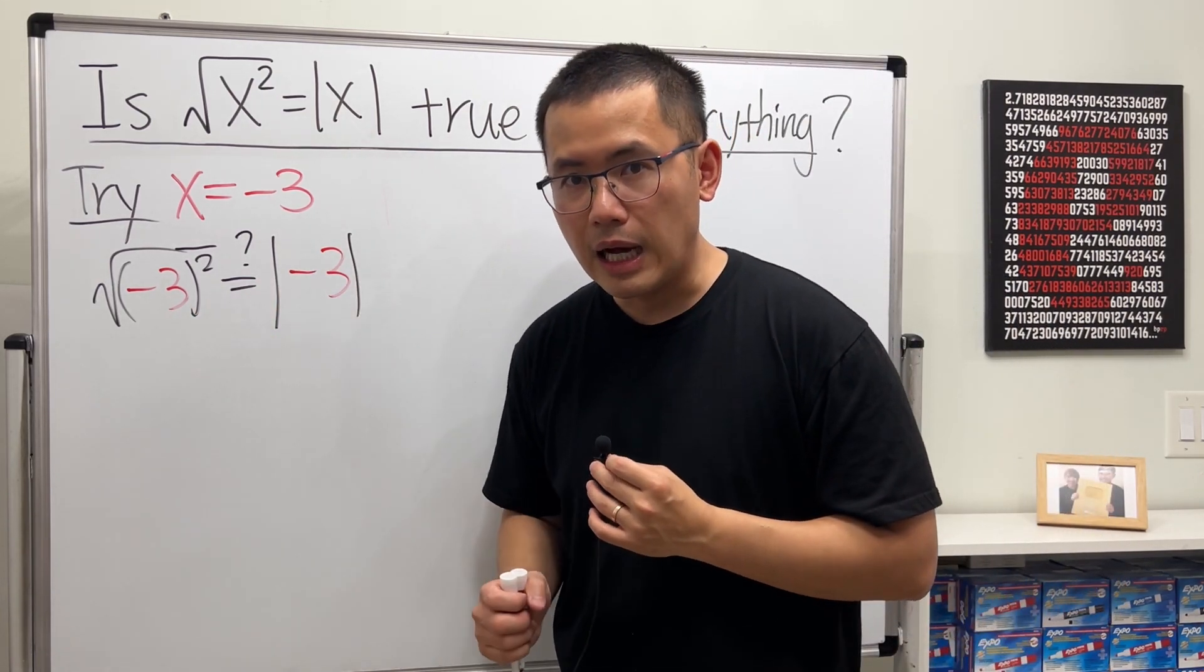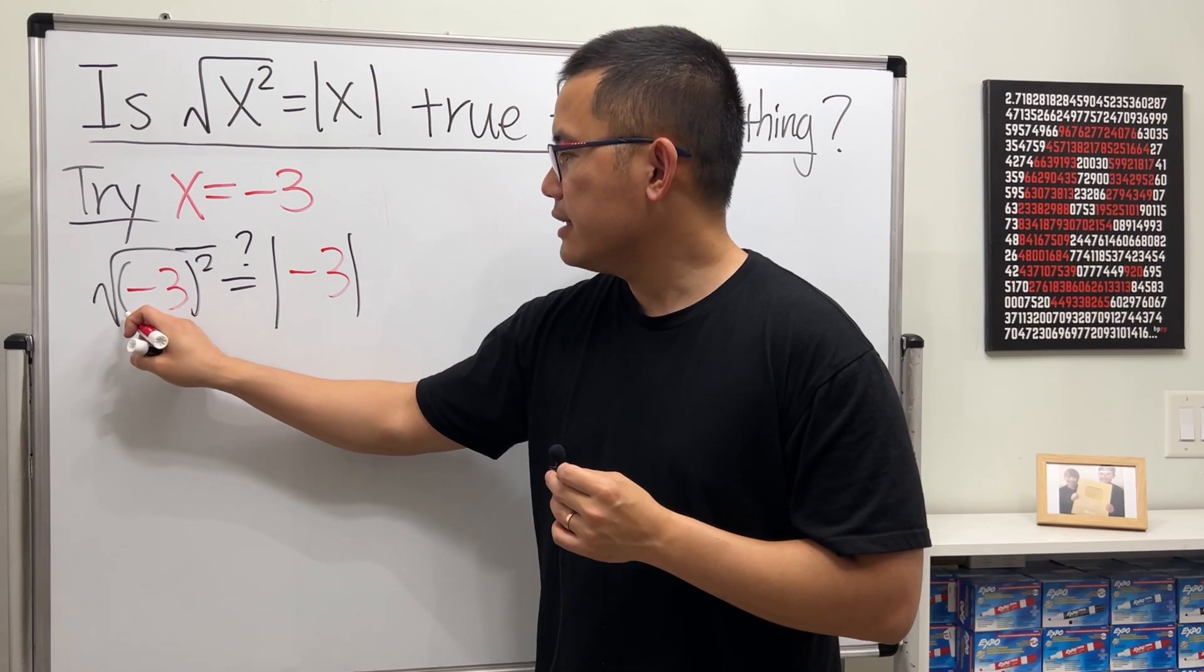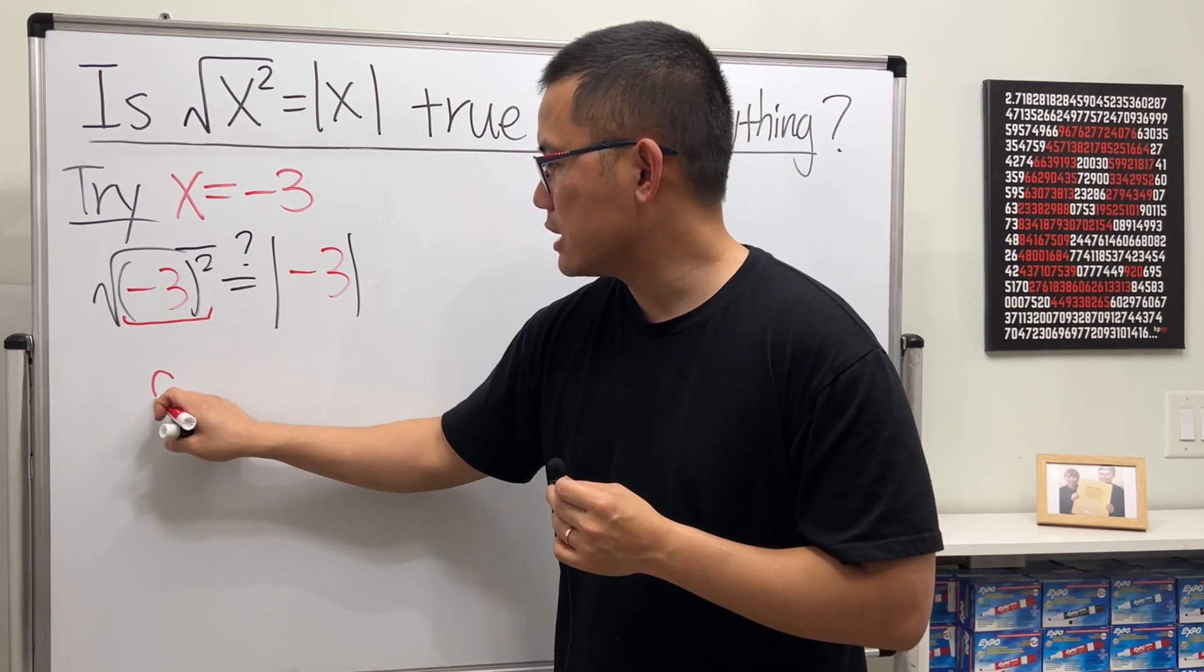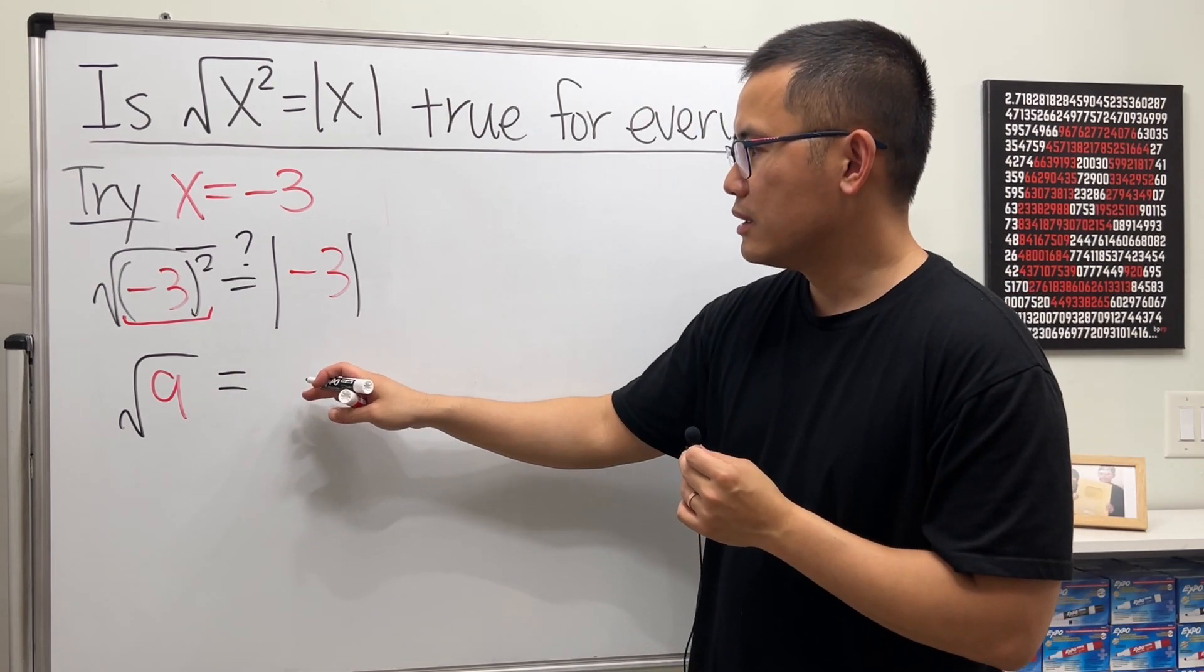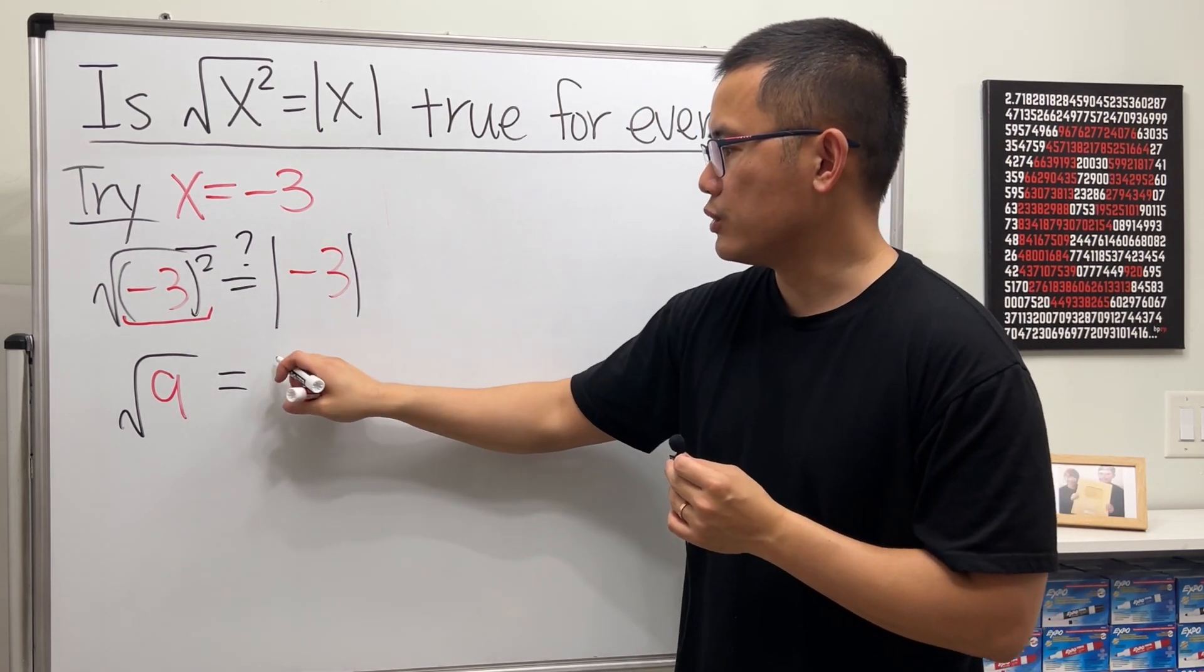Well, on the left hand side we should do this inside out, right? So negative 3 squared is positive 9. Take the square root for that. On the right hand side we get the absolute value of negative 3, which is 3.